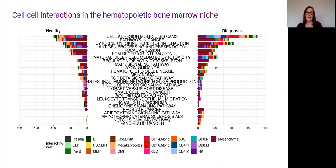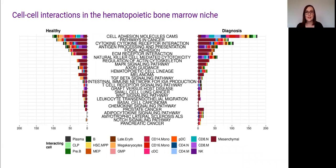Our hope is that by further investigating these interactions and finding interactions that are unique to or significantly up- or down-regulated in the AML samples, we can figure out what signals might be responsible for encouraging these cells to proliferate and survive, and hopefully identify some potential therapeutic targets. But that's all I have for now — thank you for listening and feel free to ask me any questions.